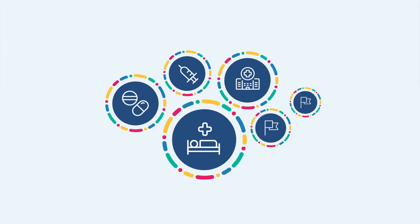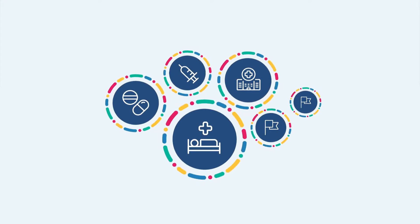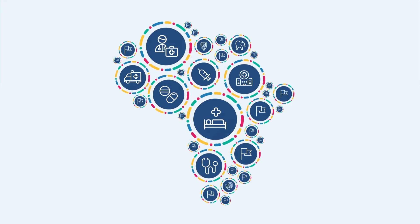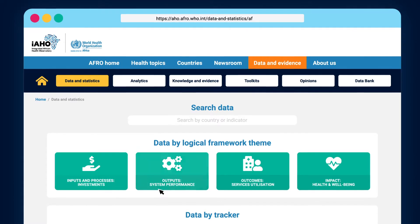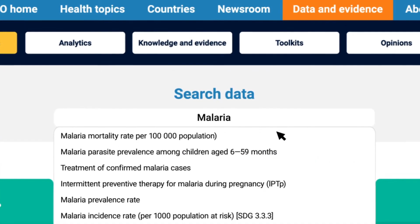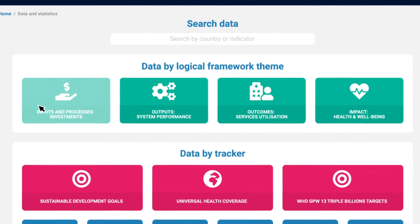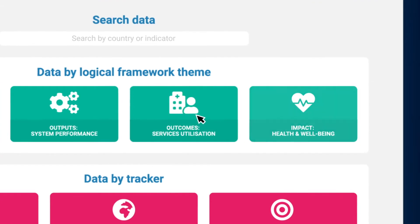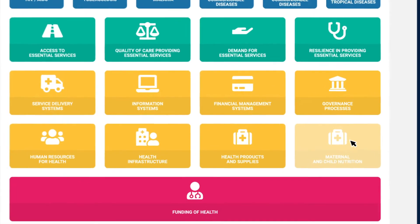The integration of the National Health Observatories within this single platform allows for cross-country comparison and learning across the different dimensions of the health system and between various programs. Under the Data and Statistics heading in the menu bar, data can be searched for either by typing in the name of an indicator, seeking by biological framework theme as information is organized according to a results chain flowing from inputs to outputs to outcomes to impact, or by examining the data by tracker through themed interactive dashboards.